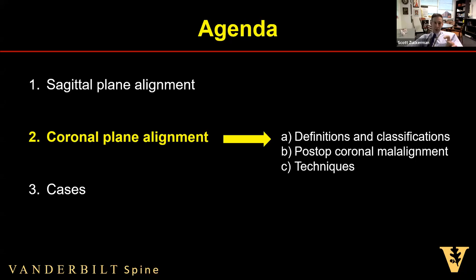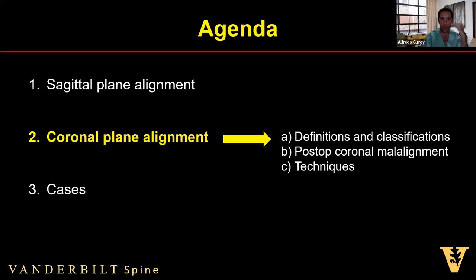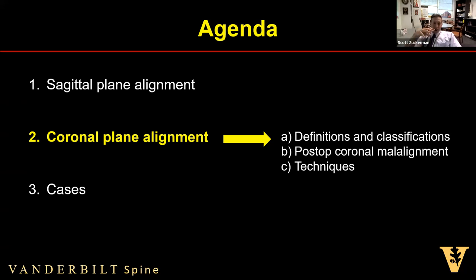Transitioning from sagittal to coronal plane — we'll talk about definitions and classifications, post-op risk factors for coronal malalignment, and some intraoperative techniques. Any questions on the sagittal stuff before we go to coronal? One question: are you using L1 pelvic angle? I've started to use it a little more — Jeff Hills at Vanderbilt really championed that — but I haven't figured out an exact intraoperative application. I use it to corroborate what I'm finding with traditional angles, which are a little easier to measure intraoperatively.